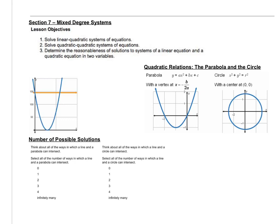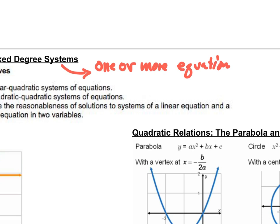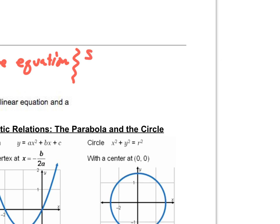Hello and welcome to section seven. This is a section about mixed degree systems. A system of equations is when you have one or more equations. And the solution to a system is where those graphs intersect.